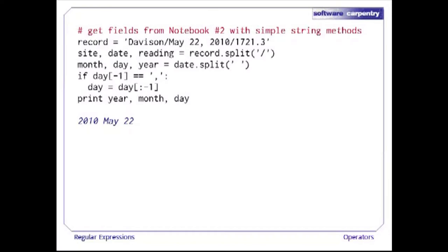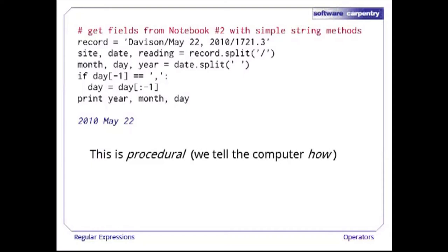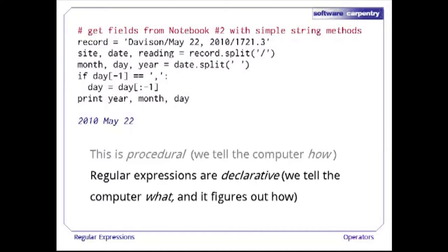If our record is a string, we could split on slashes to get the site, the date, and the reading. Then split the middle field on spaces to get month, day, and year. And remove the comma from the day if present. This is a procedural way to solve the problem — we are telling the computer how to do something. Regular expressions, by contrast, are declarative: we tell the computer what we want, and it figures out how to do it.